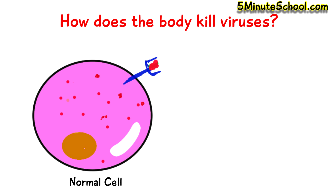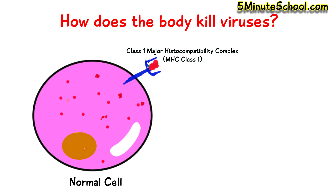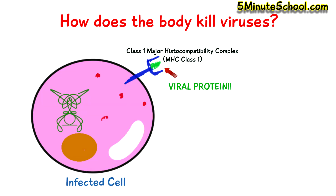Normal healthy cells have a special receptor on their cell surface called class 1 major histocompatibility complex, which contains a protein. When a virus infects a cell, it starts to take over the protein production inside the cell. Some of the viral proteins it produces end up being attached onto this same receptor, the class 1 major histocompatibility complex, on the surface of the infected cell.